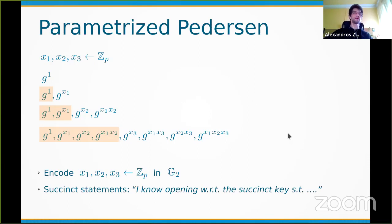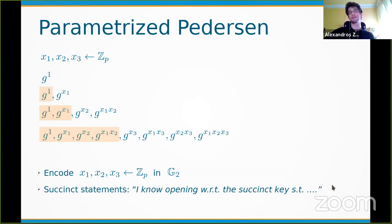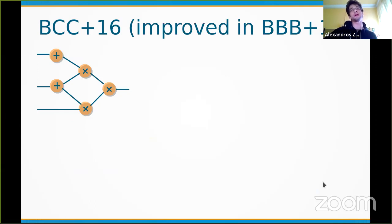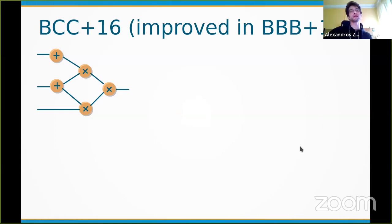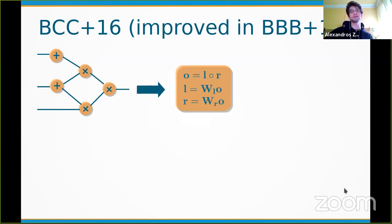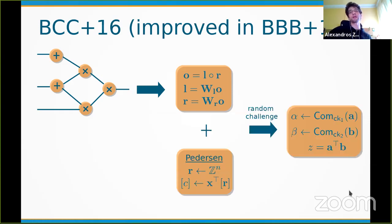The commitment is also efficiently updatable — we multiply one key with a new one and provide a discrete logarithm proof of knowledge. To build the zk-SNARK, we start from the BCC et al. construction (later improved in Bulletproofs): we translate an arithmetic circuit to constraints, combine with a Pedersen commitment key and random challenge, reducing to a statement where the prover claims knowledge of openings a and b satisfying an inner product relation.